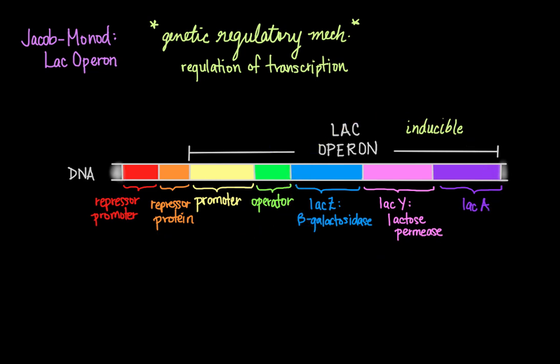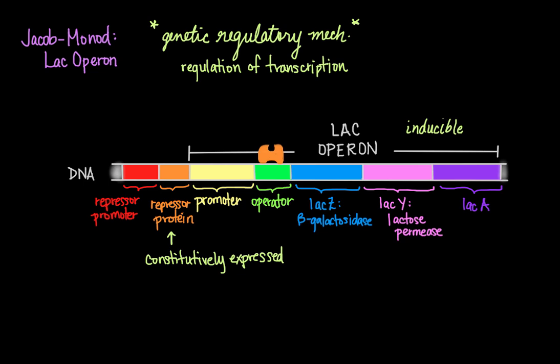When glucose is readily available to the cell, the repressor protein is constitutively expressed — meaning it is transcribed at baseline as the default. This regulatory protein binds to the LAC operator, which interferes with and represses the binding of RNA polymerase to the LAC promoter. This prevents the transcription of the genes for lactose metabolism.